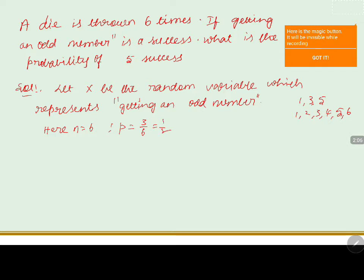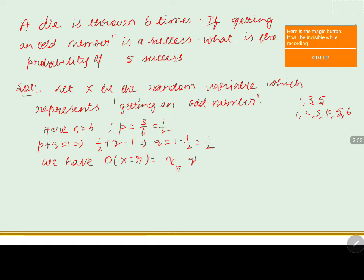This makes p equal to one by two. We know the relation between p and q such that p plus q equals one. So one by two plus q equals one, giving q equals one minus one by two, that is equals to one by two. Now we use the formula: P(X = r) = nCr into q to the power of n minus r into p to the power of r.